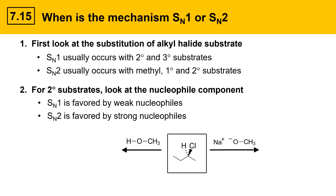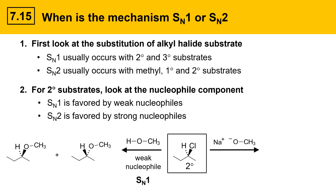Let's take a look at an example where we have an alkyl halide substrate that could undergo either reaction. In this case, we have a secondary alkyl chloride substrate with two reaction conditions. On the left is methanol — this is a weak nucleophile; you can tell because the oxygen is neutral. Neutral oxygen nucleophiles are weak. Therefore, this will undergo reaction by the SN1 mechanism, which gives mixtures of stereoisomers — a retention product on the left and an inversion product on the right.